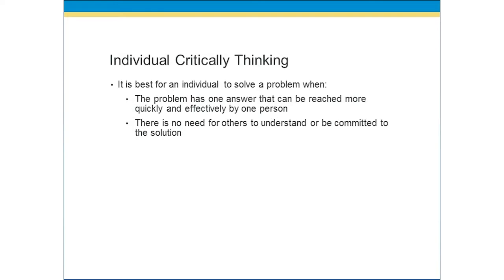Now let's talk about individual critical thinking. As an individual, being a critical thinker is a huge skill because it allows you to solve problems on your own. However, there are appropriate times for individual critical thinking. If the problem only has one answer that can be reached more quickly and effectively by one individual, that's when individual critical thinking should take place — meaning the problem exists, needs to be solved immediately, and really only has one answer. There's no need for others to get involved. Individual critical thinking should only take place when it's appropriate and best for a single individual to solve the problem quickly and when there is one answer.